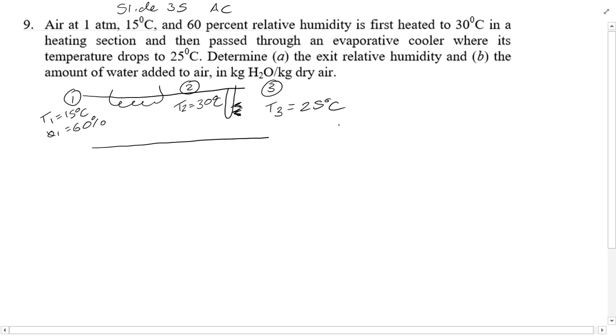Now, think about this. As we've covered before, process 1 to 2 is a heating process. Therefore, specific humidity is going to remain constant, so we know omega 1 is equal to omega 2.